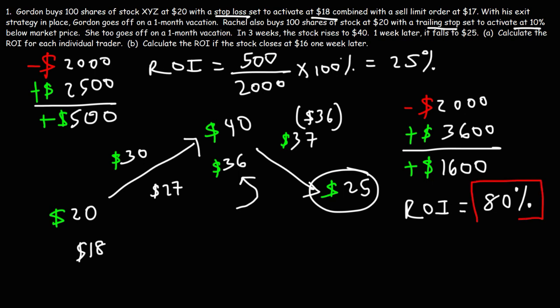Now let's consider the second scenario - if the stock closed at $16 one week later as opposed to $25. If the stock were to close at $16, then Gordon's stop-loss order would have been activated. Once it reaches $18, the sell limit order will be activated where it's going to try to sell his shares at $17 or better. So we're going to say that he gets out at $18.